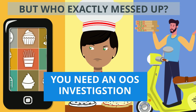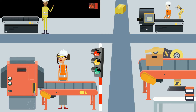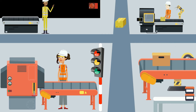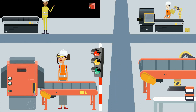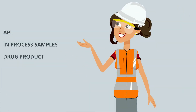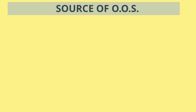If OOS can happen with pizza delivery, it can surely happen with much larger and more complicated processes like drug development and production. Sometimes the API, in-process samples, or even the final product are found to be out of specification when tested. And just as before, the errors causing OOS in the drug industry can lie in many different places.